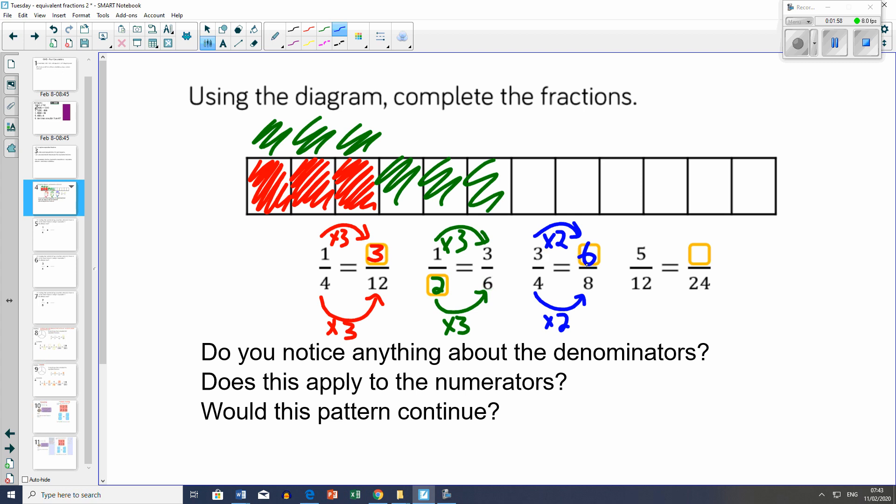If I wanted to show 3 quarters of this shape, if I know that 3 out of 4 can be represented as something over 12... 4 multiplied by 3 is 12, and 3 multiplied by 3 is 9. I could use this diagram to get 9 pieces of 12. There we go, now I have 3 quarters shaded in.